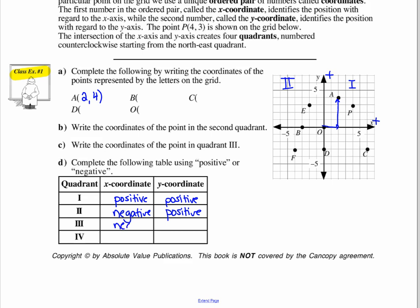Quadrant three. Both negative because it's going to be left and down from the origin. So, negative and negative, right? They're both negative and negative here. Quadrant four, x is positive but y is negative.